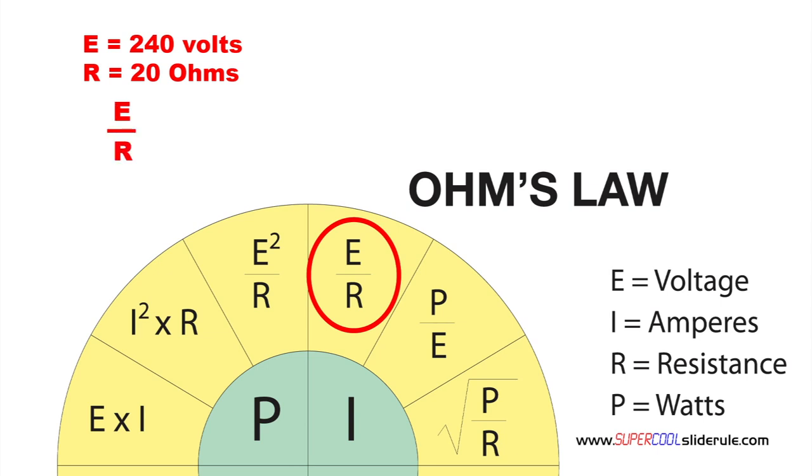We substitute these values into our equation. Replace the E with voltage of 240. Replace the R with resistance of 20. Performing this operation gives us amps of 12.